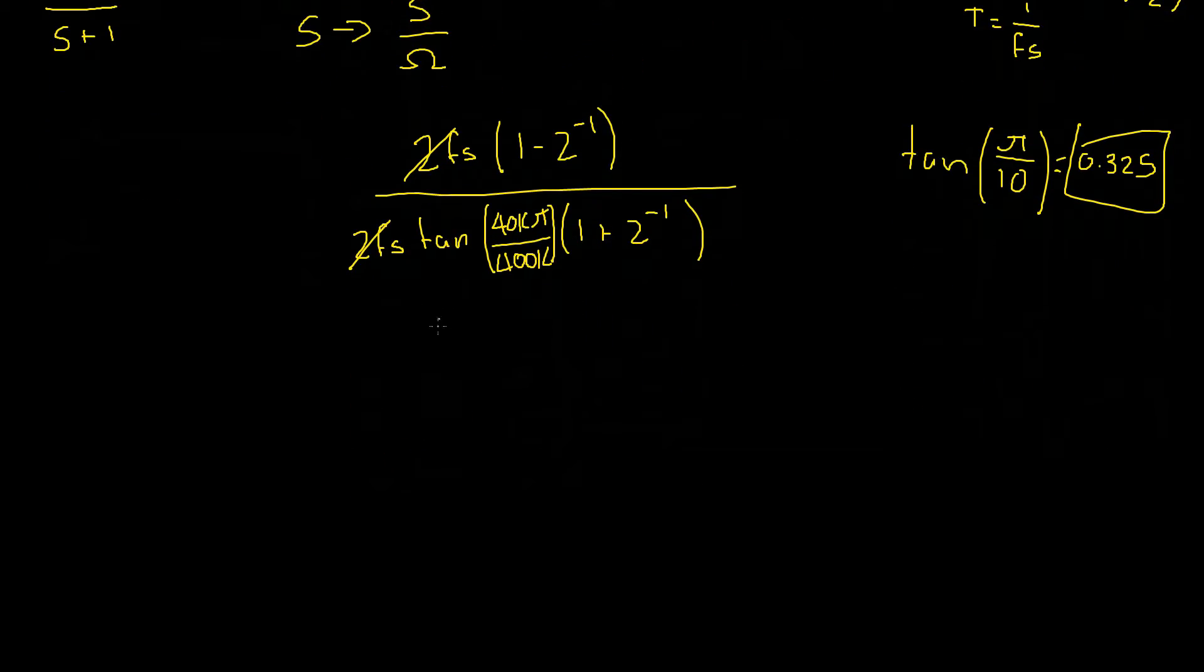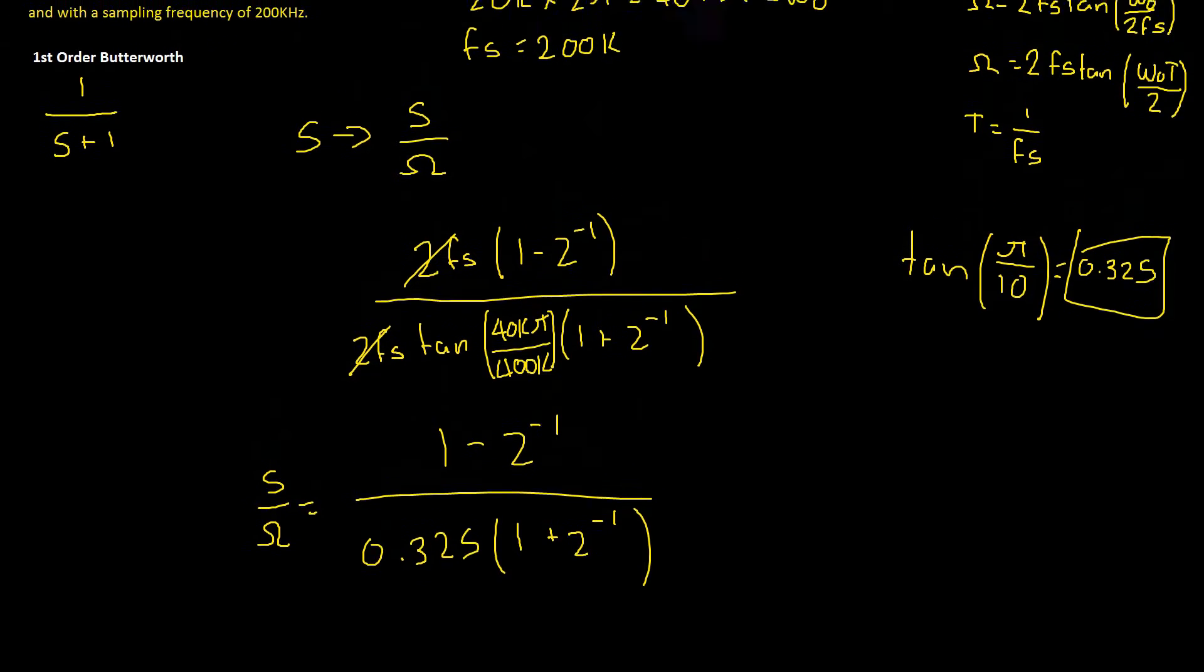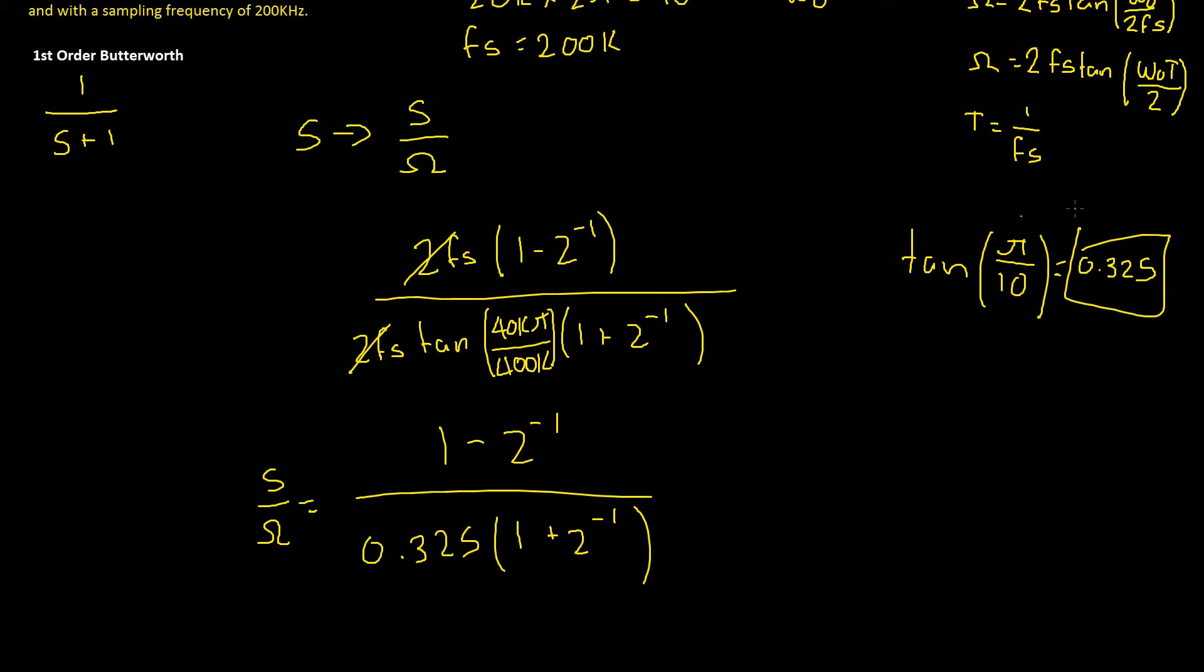Okay, so let's sub this in for our value for tan of 40k pi divided by 400k in our new S term. That will give us 1 minus z to the power of negative 1 in our numerator, divided by 0.325 multiplied by 1 plus z to the power of negative 1. So we now have our S divided by omega value.